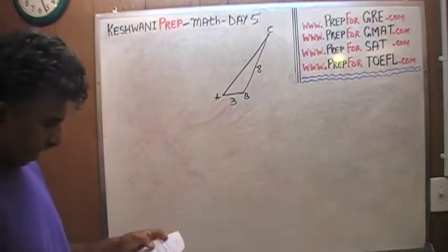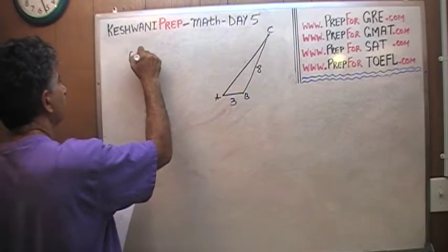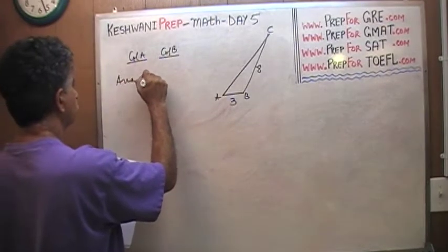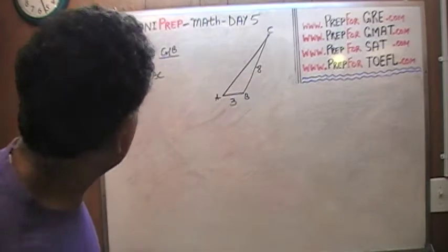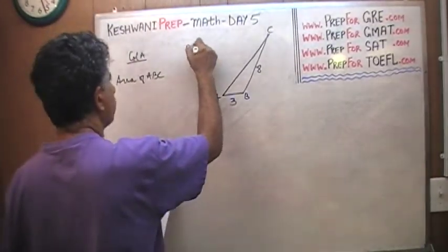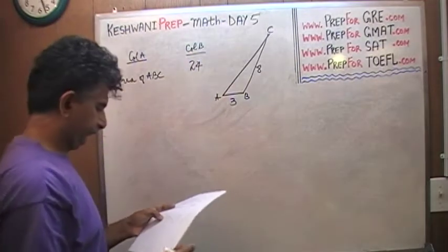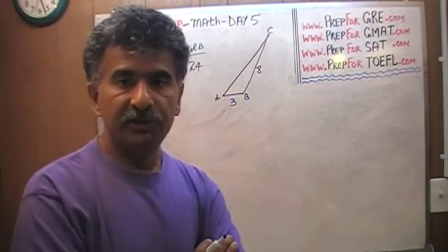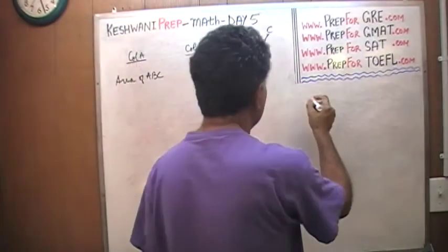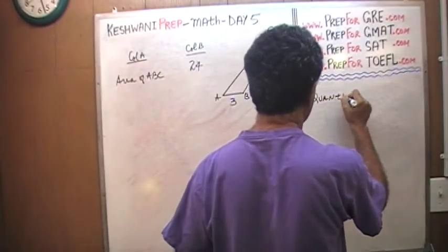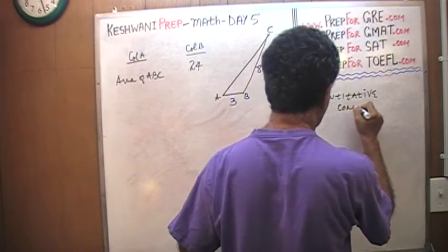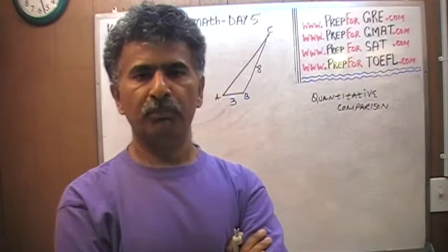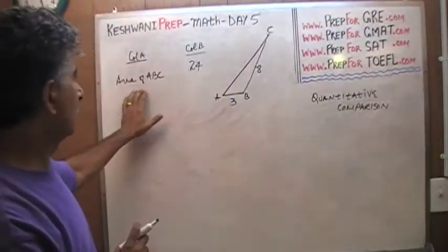We have a triangle that looks like that and the question simply is, which quantity is bigger? Area of ABC or 24. This is a typical problem that appears in the GRE under what is known as quantitative comparison. Quantitative comparison is so called because your job is to compare the two quantities that are given in the two columns, Column A and Column B.